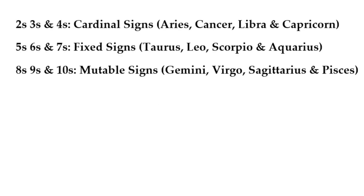Within the minor arcana, twos, threes, and fours relate to the qualities of the cardinal signs — Aries, Cancer, Libra, and Capricorn. Fives, sixes, and sevens are all fixed signs — Taurus, Leo, Scorpio, and Aquarius. And the eights, nines, and tens relate to the mutable signs of Gemini, Virgo, Sagittarius, and Pisces.